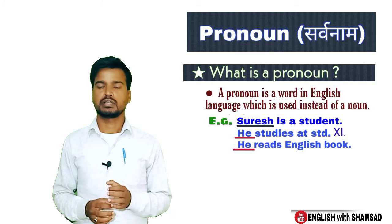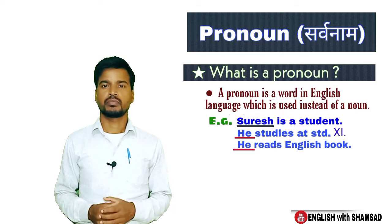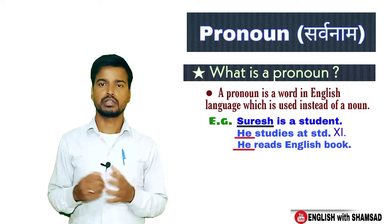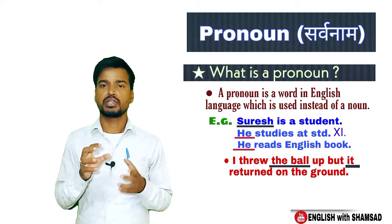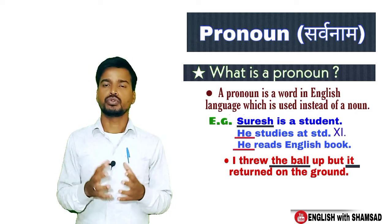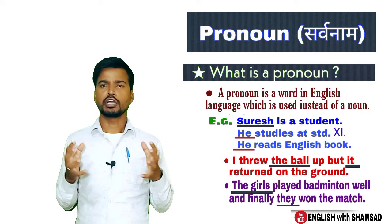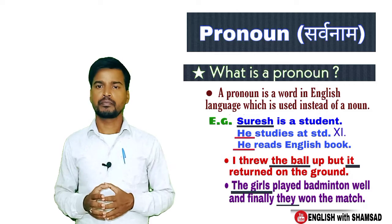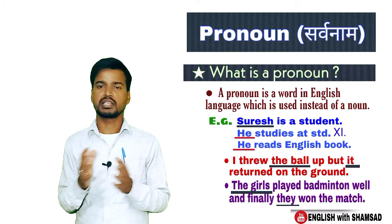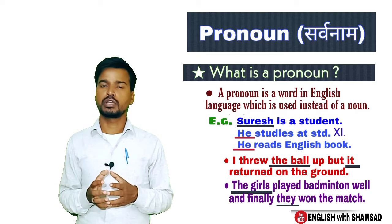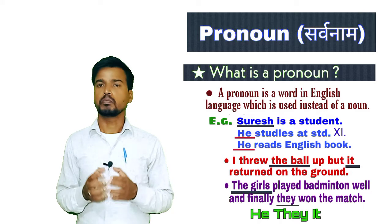So instead of saying 'Suresh reads English book,' we say 'he reads English book.' Another example: 'I threw the ball up but it returned on the ground' — here 'it' replaces the ball. Another example: 'The girls played badminton well and finally they won the match' — here 'they' replaces 'the girls', which is a plural noun. So he, they, it are examples of pronouns.